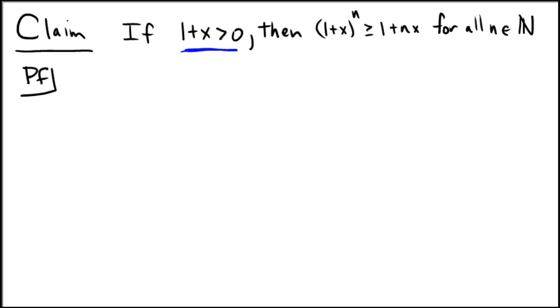We have an overarching assumption here that 1 plus x is bigger than 0, so we'll start off by saying suppose that 1 plus x is larger than 0. So that's overarching, it's going to go throughout the whole proof.